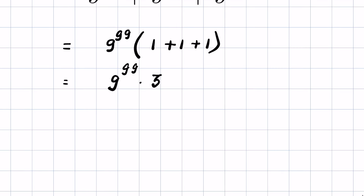Now 9 we can write as 3 raised to the power 2, then whole raised to the power 99, times 3. We can write the 3 as 3 raised to the power 1.